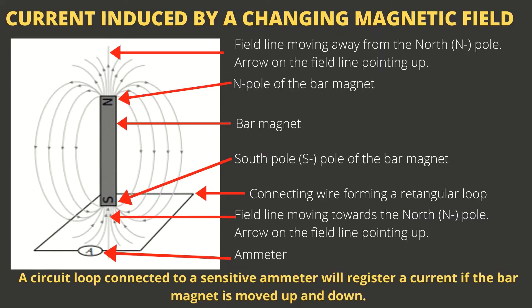In this slide, we are looking at a bar magnet showing the north pole represented by the letter N and the south pole represented by the letter S. Around the bar magnet we have magnetic field lines — the field lines appear to be emerging from the north pole and moving towards the south pole. Just below the magnet we have a wire forming a rectangular-shaped loop connected to an ammeter, which is a device that measures current, symbolised by a circle with the letter A inside.